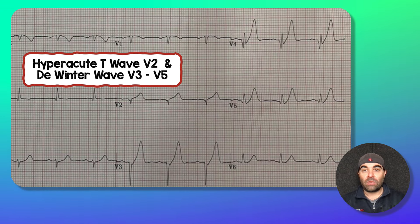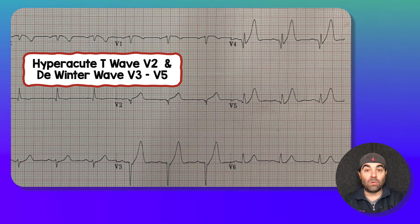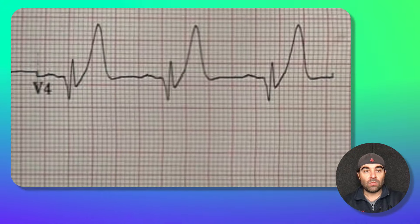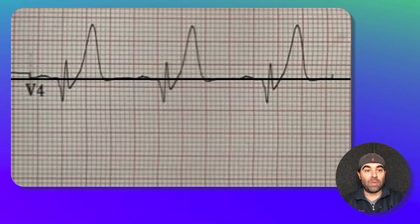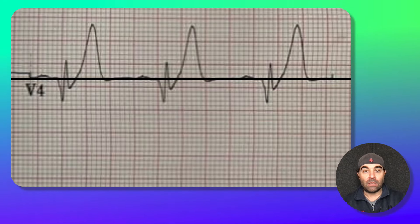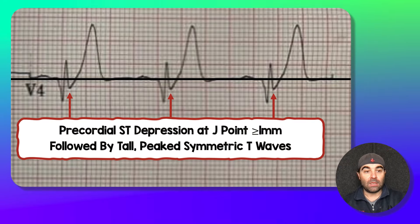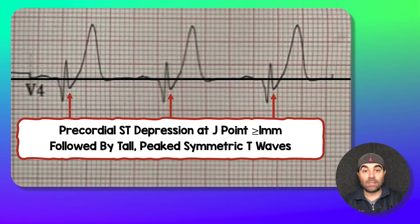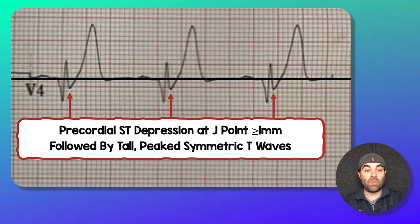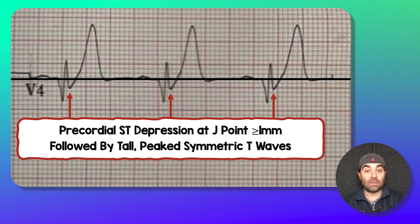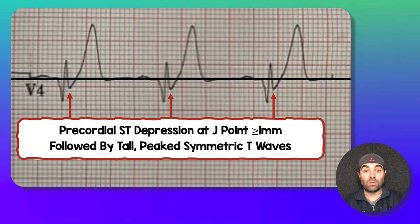V3, V4, and V5 have this finding called a DeWinter wave. Let's zoom in on V4. If we imagine that this black line represents our baseline, we need to look at these precordial ST depressions at the J-point — where your QRS meets your ST segment. You can see that's about two boxes below the baseline, followed by this tall, peaked symmetric T-wave. That is the classic definition and finding of a DeWinter wave.